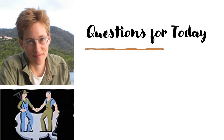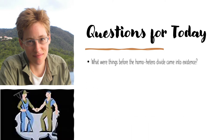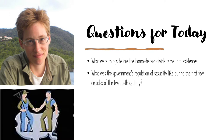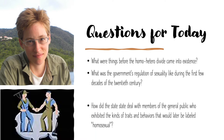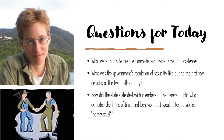We'll have an opportunity to talk about this in a couple of days, when we get to reading Cannaday's article on the GI Bill. For now, however, I wanted to set this up by talking about the pre-World War II era — that is, the period just before the American federal government bureaucratized the sexual binary. What were things like before the homo-hetero divide came into existence? What was the government's regulation of sexuality like during the first few decades of the 20th century? In particular, how did the state deal with members of the general public who exhibited the kinds of traits and behaviors that would later be labeled homosexual?